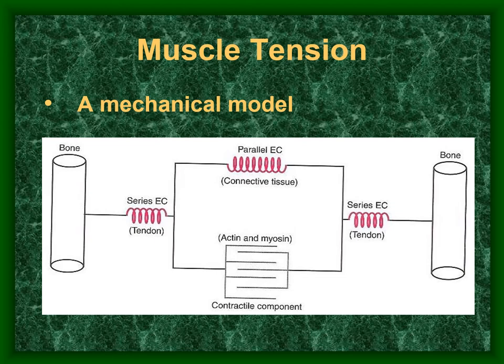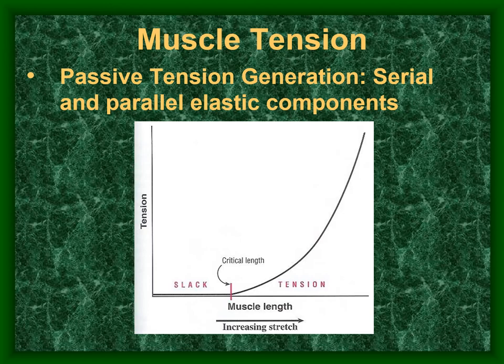Mechanically, muscles have two components: a motor — the contractile component of actin and myosin — and springs. There is a spring within the muscle called the parallel elastic component, and springs at either end called the series elastic component. A muscle can be elongated to a certain length before any tension increases at all, depending on the muscle and individual.